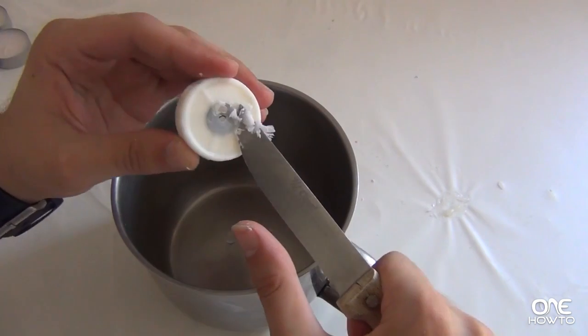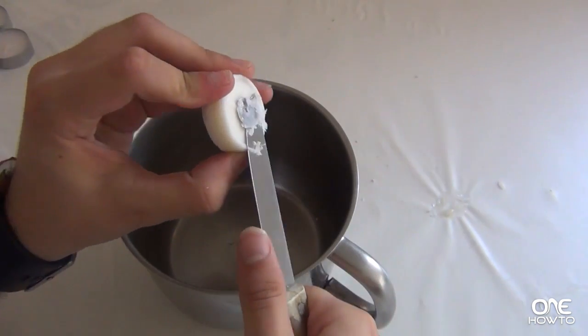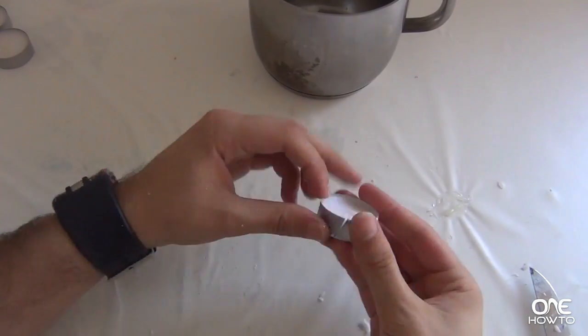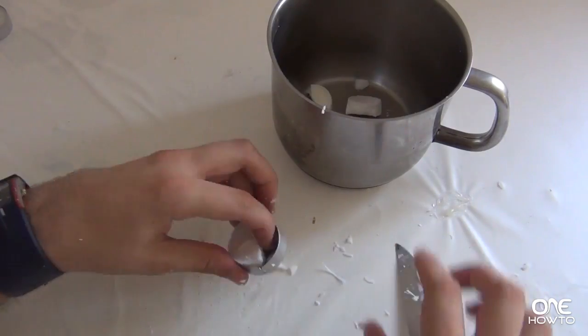Cut it into pieces so it's easy to boil and do the same with the rest of the candles. For the amount of makeup we're going to use we have three candles.